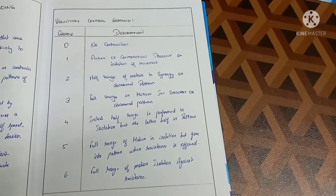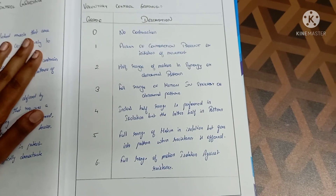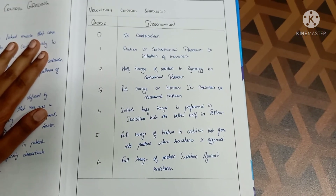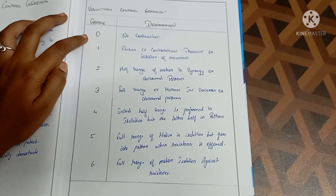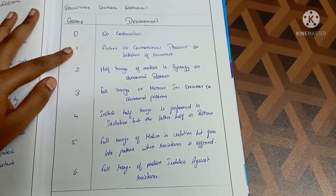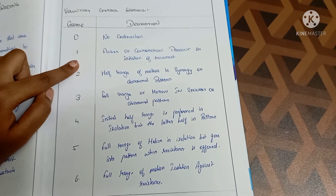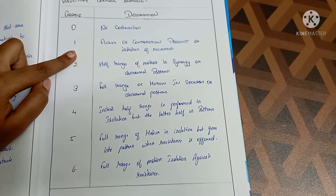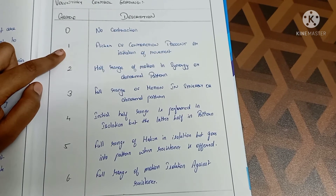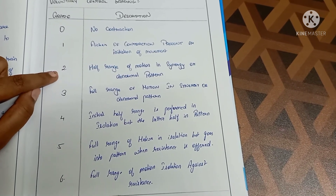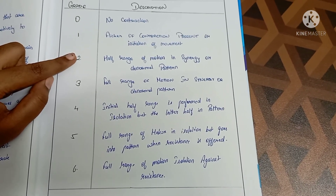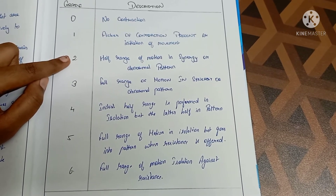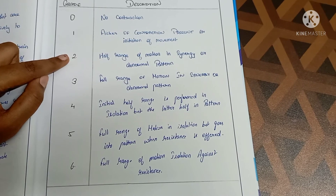Next, coming to voluntary control grading — it is fully based upon the synergy patterns. In Grade 0, there will be no contraction in the limb. In Grade 1, there will be flickers of contraction — when the patient tries to initiate movement, only flicker contractions can be seen. In Grade 2, the range of motion will be half, but it occurs in the abnormal or synergy pattern.